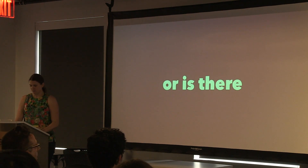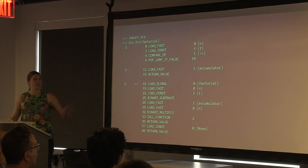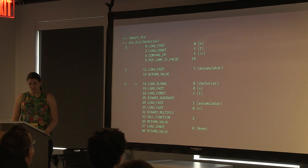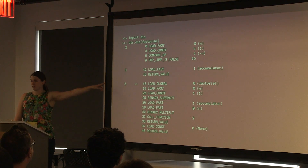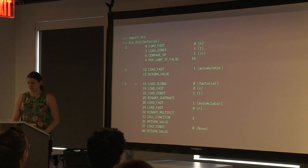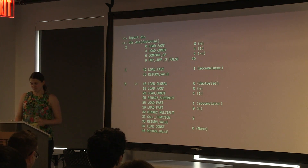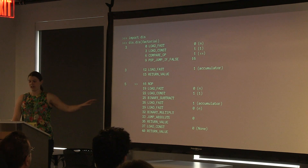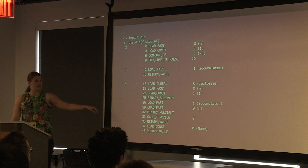Bytecode is the language the interpreter speaks that the compiler generates. The interpreter steps through instructions, and in Python bytecode there are jump instructions — that's how loops and if statements are implemented. Looking at the existing bytecode for our function, there's already a jump instruction: pop_jump_if_false for the conditional. We're interested in two others: load_global, which loads the recursive call, and call_function at offset 33, which actually calls it. We can use load_global to detect a recursive call and turn call_function into a jump — instead of calling the function, just jump back to the top.